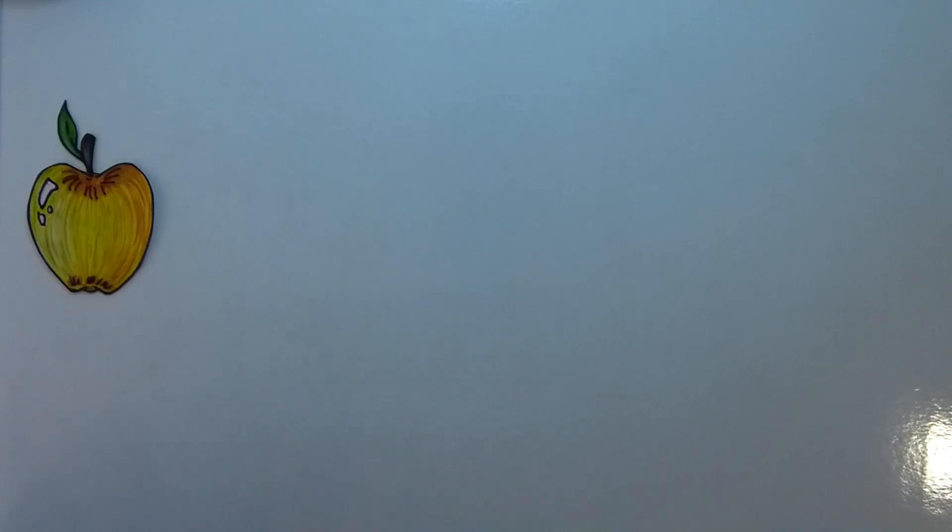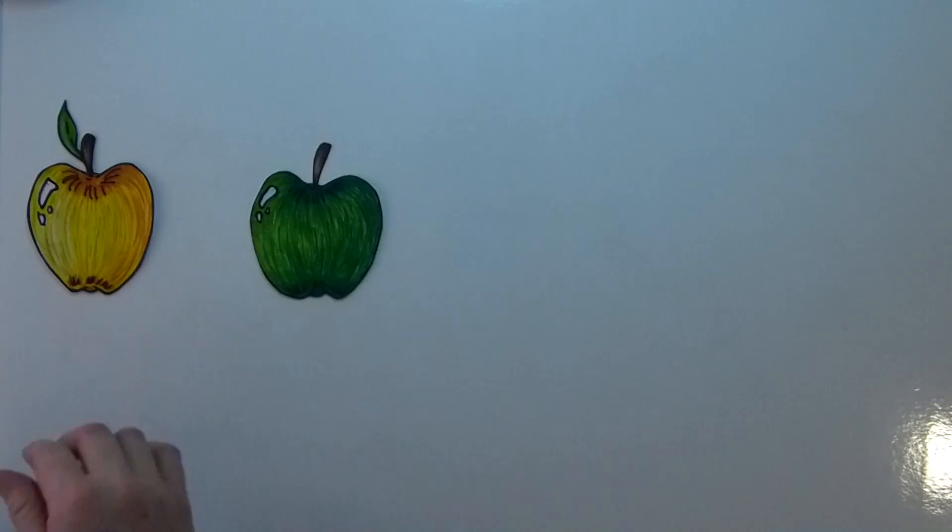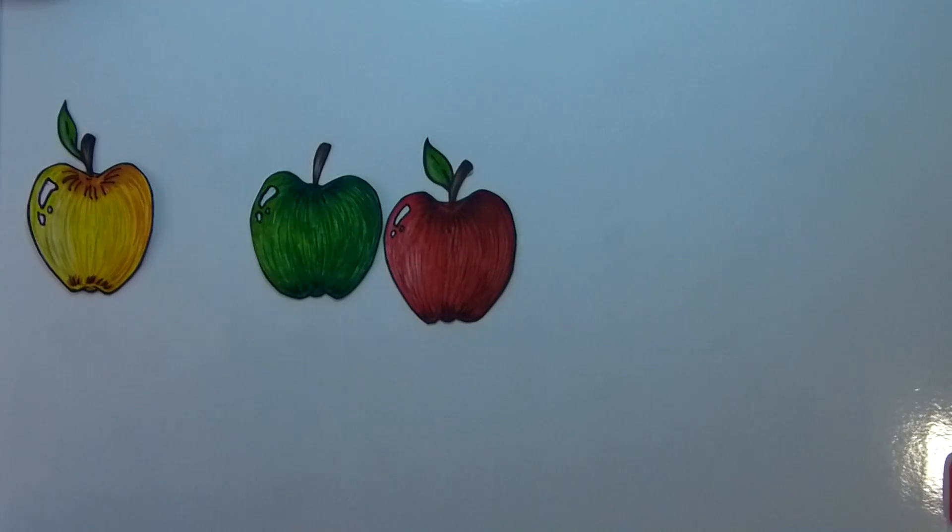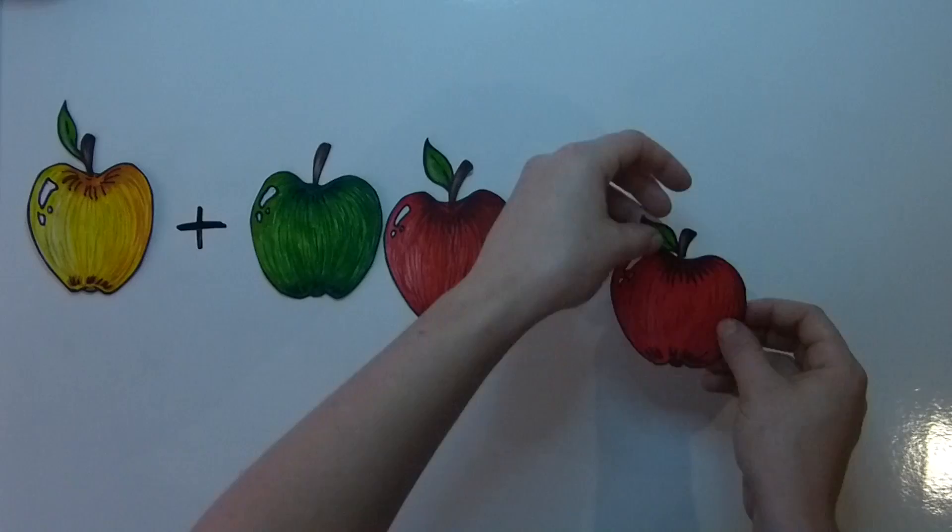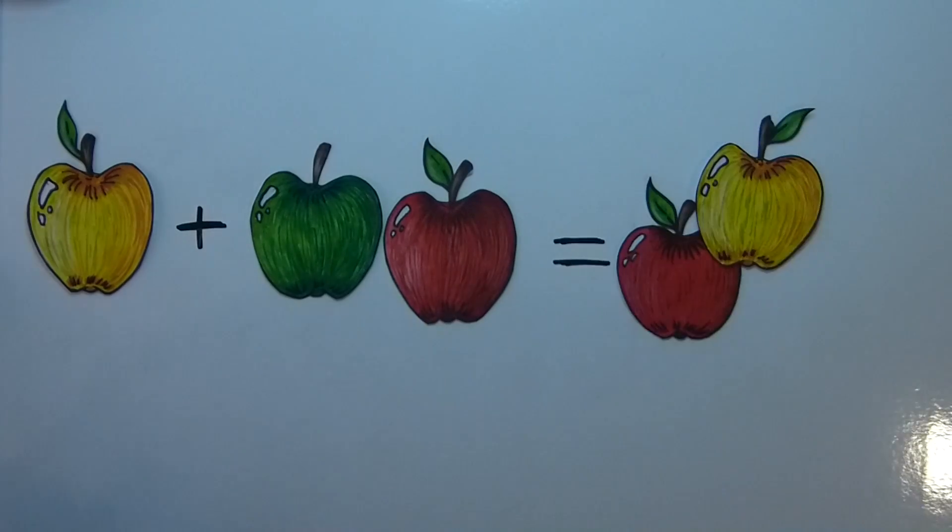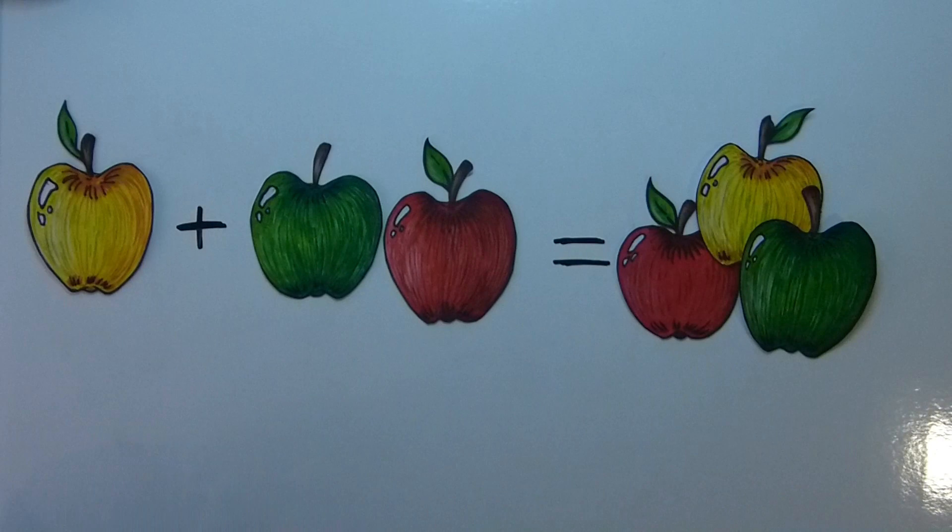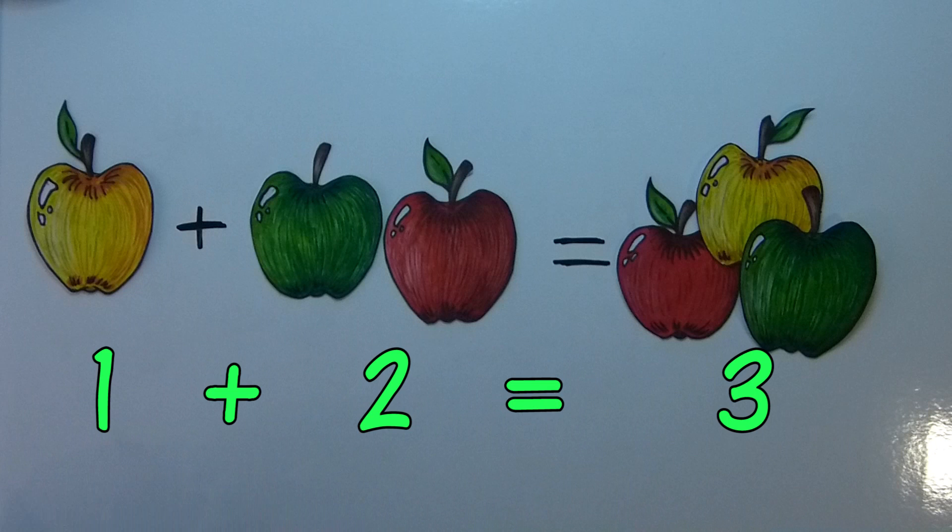Let's try another. Sam has one apple and is given two more apples. How many apples does Sam have now? One apple plus two apples equals three apples. In numbers, it looks like this.